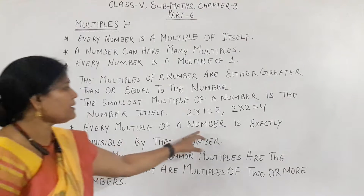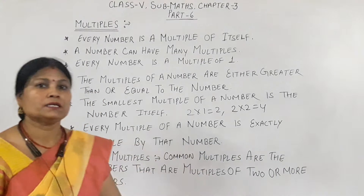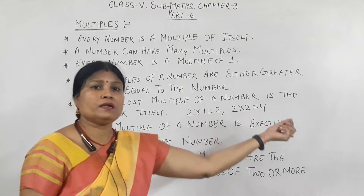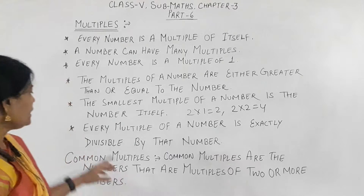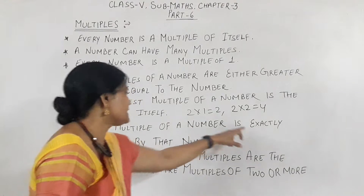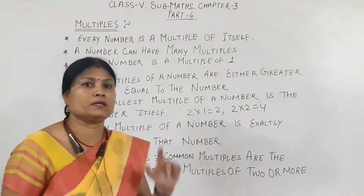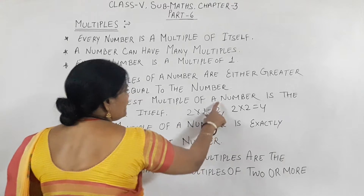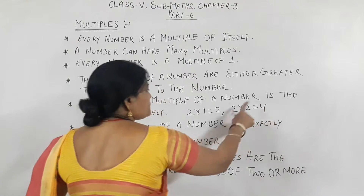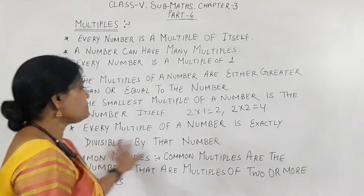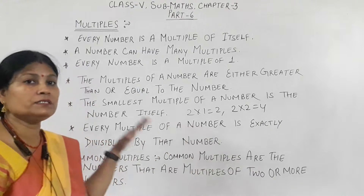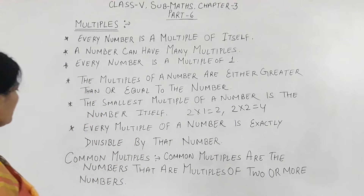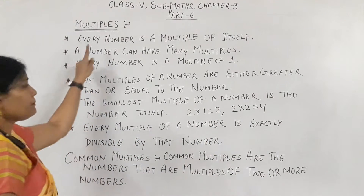Every multiple of a number is exactly divisible by that number. Because we are doing the multiplication of the given number, so it is 100% sure. For example, take number 2: the multiple 2 is divisible by 2, and 4 is also divisible by 2. So we can say all multiples are exactly divisible by the given number. Now, all these topics are about multiples.